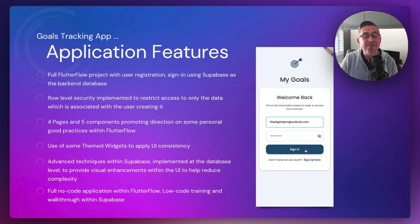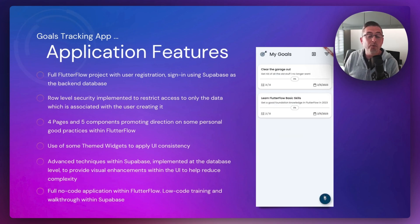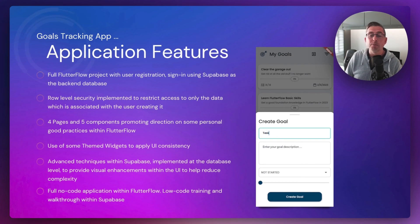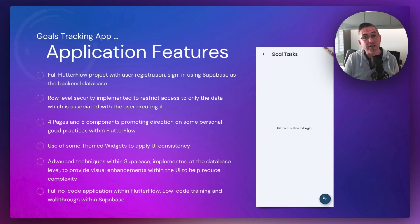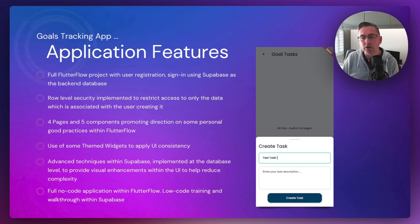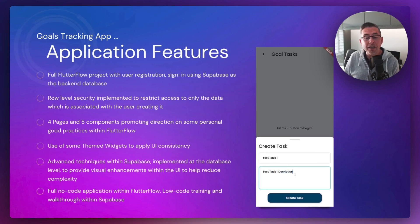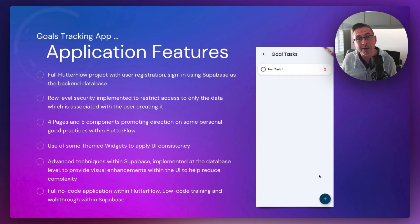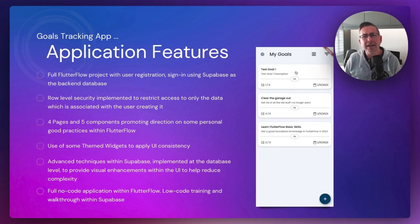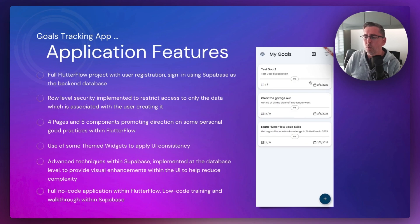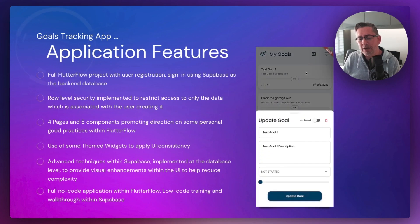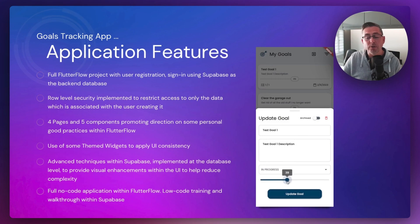So what are the application features? We're going to be building a full FlutterFlow project with user registration and sign-in using Supabase as the back-end database. We're going to implement that really important row level security to restrict access to data associated with the user — many videos on YouTube skip past row level security, but we're actually going to use it here. The application contains four pages and five components, and we're going to build it in a particular way to suit what you're seeing on screen.